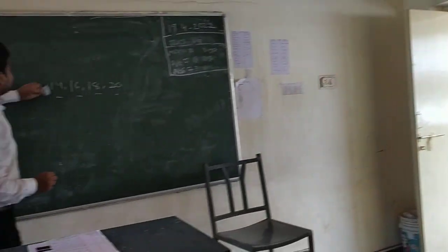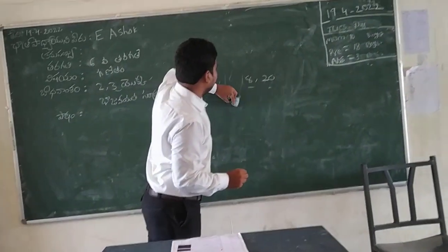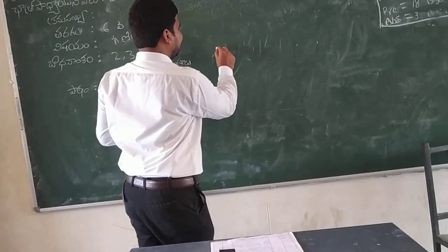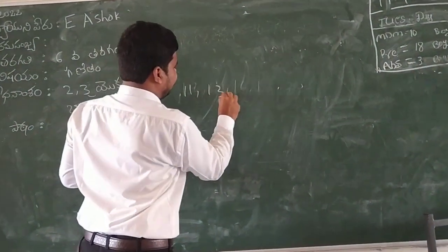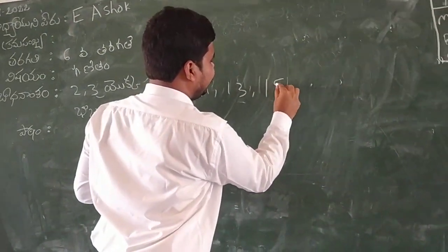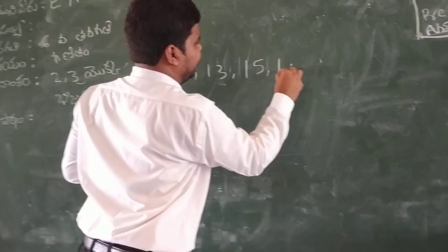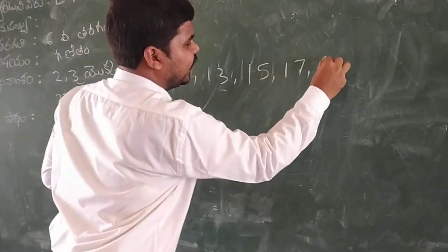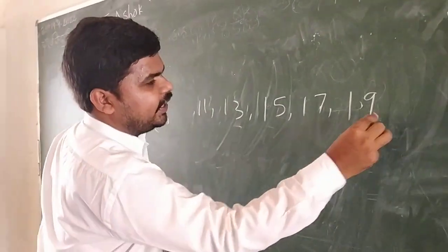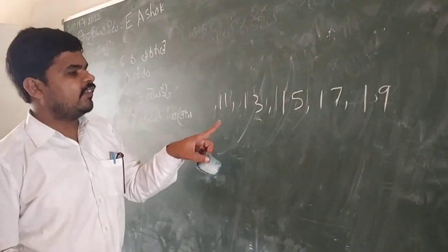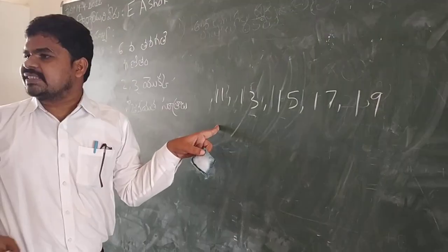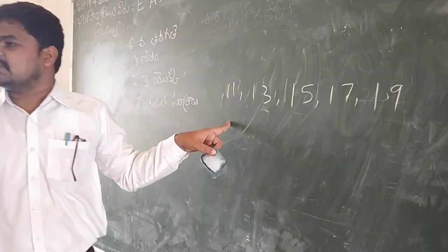So now we choose odd numbers: 11, 13, 15, 17, 19. These numbers are odd. Odd numbers.